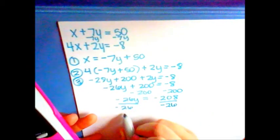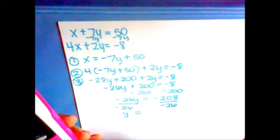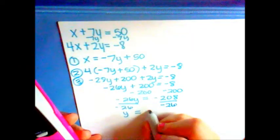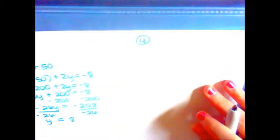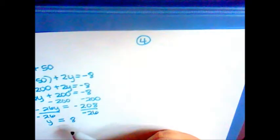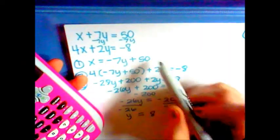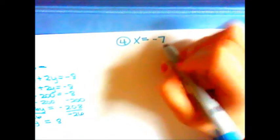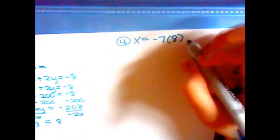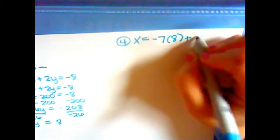We then substitute that 8 into the first problem. x equals negative 7 times 8 plus 50.